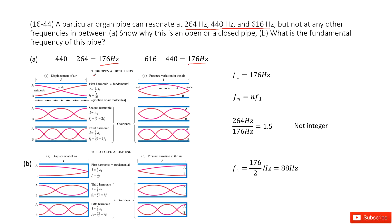If this organ pipe is open at both ends, then F1 equals 176 Hz. From this picture, we find the difference between two nodes is F1.